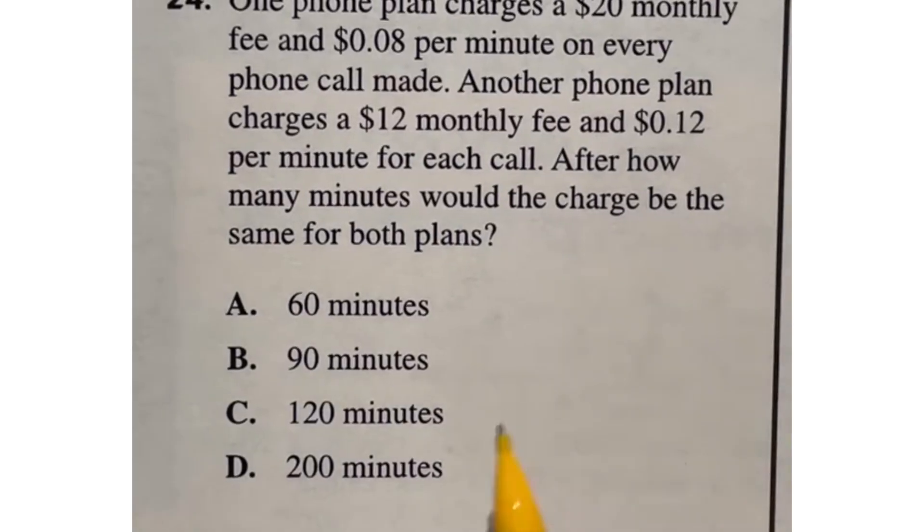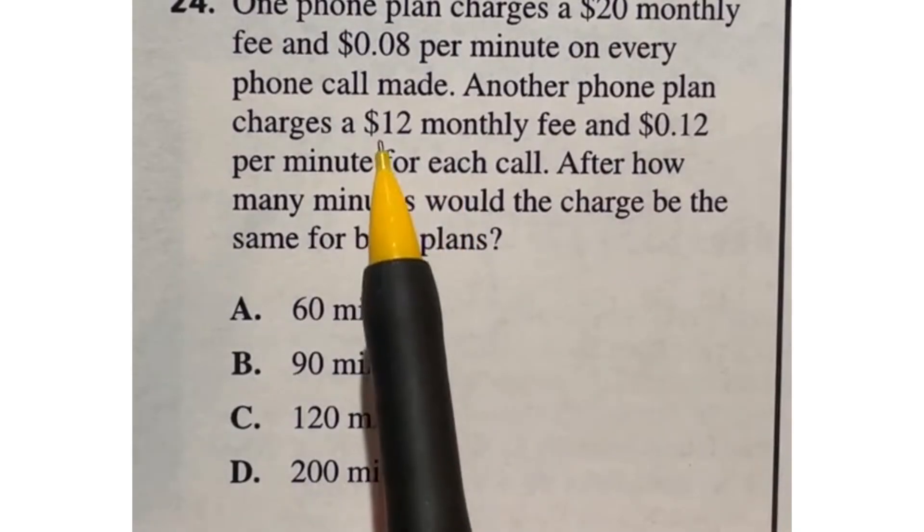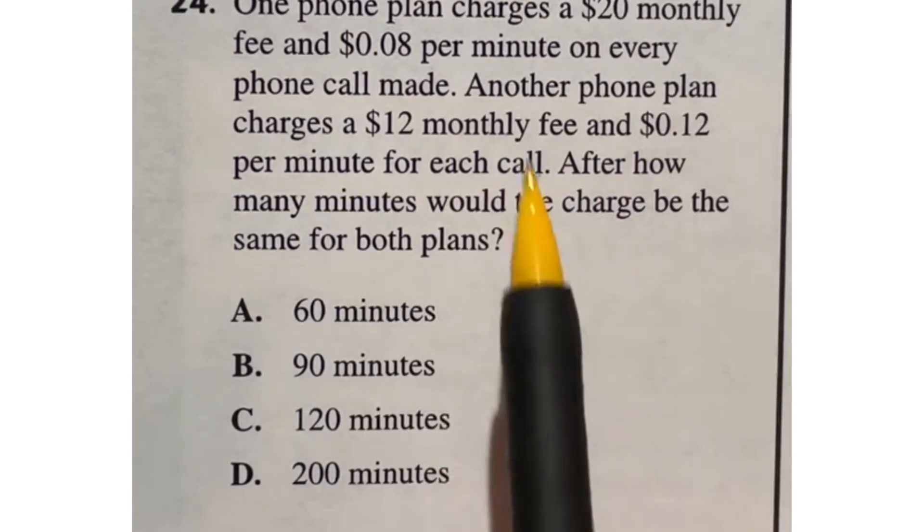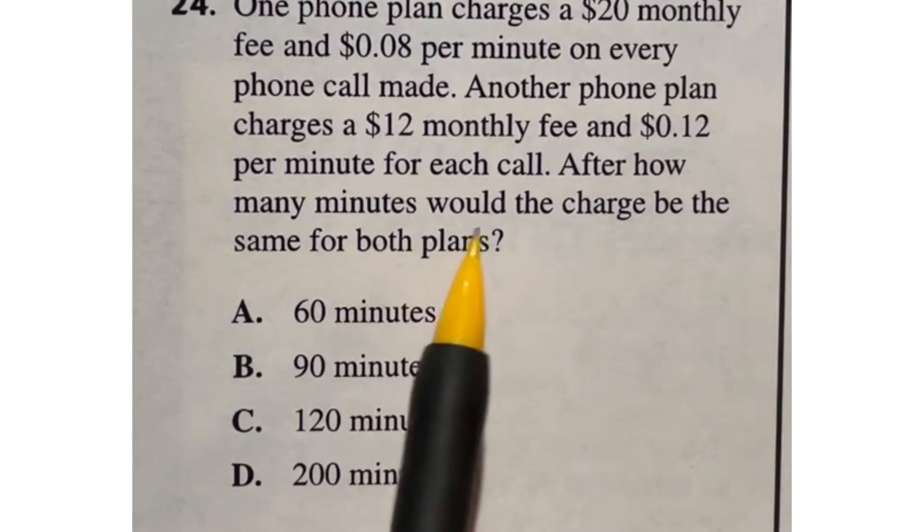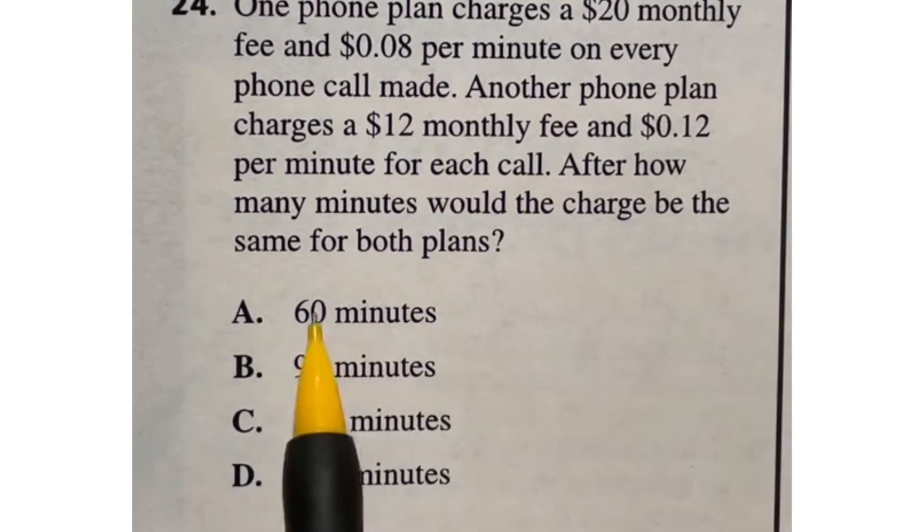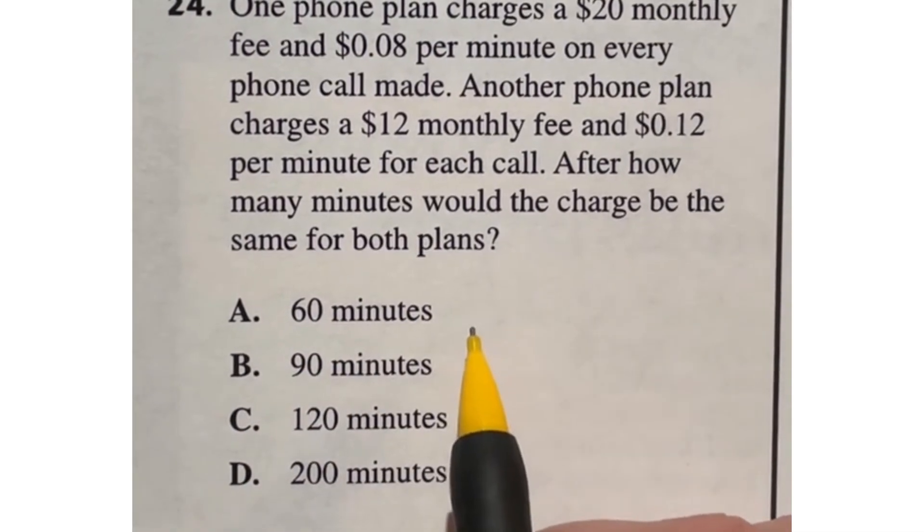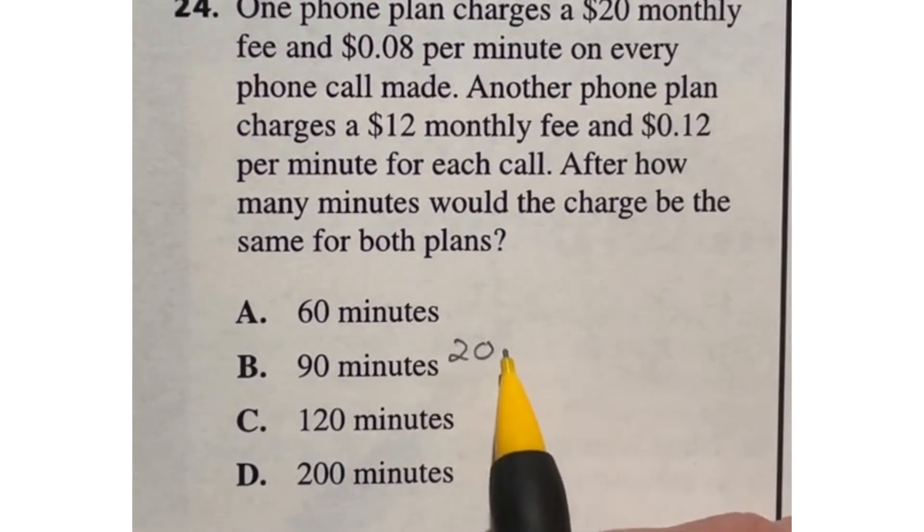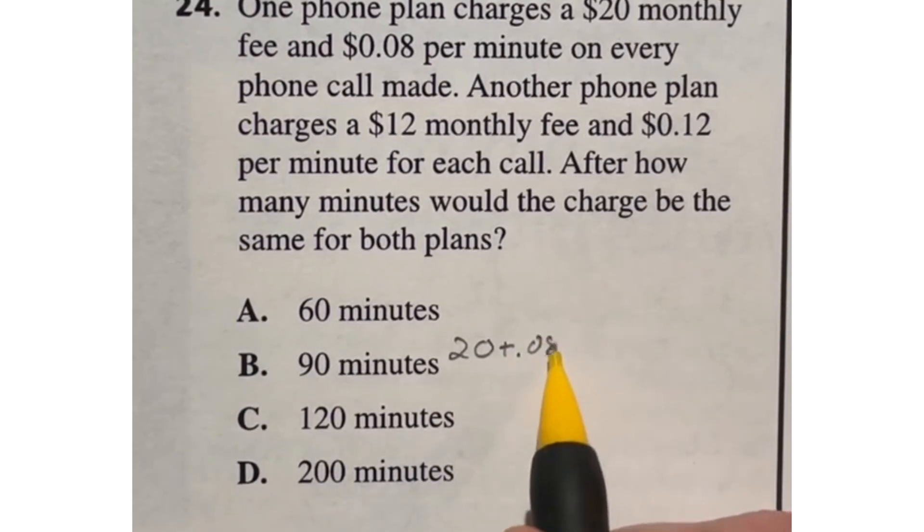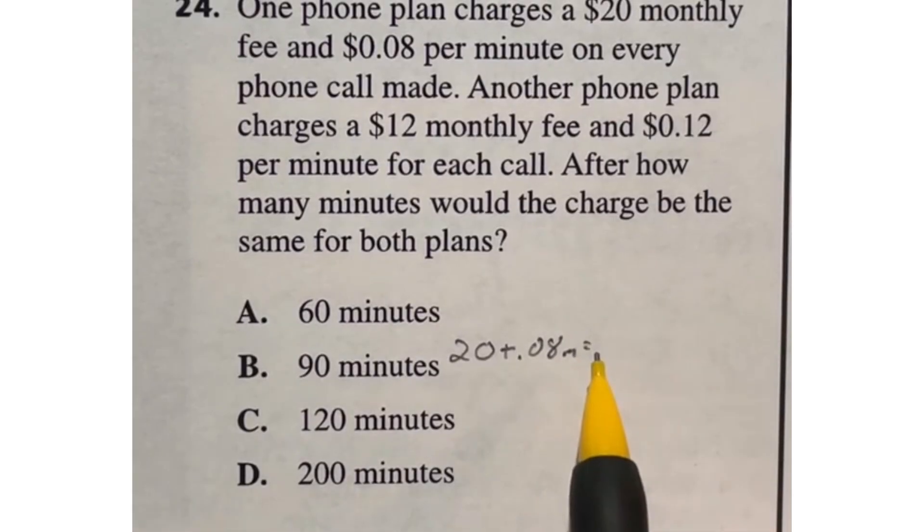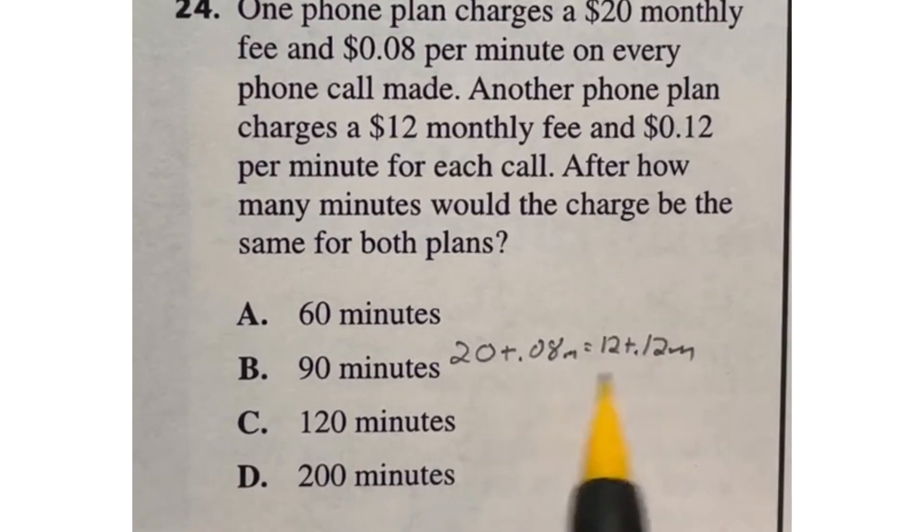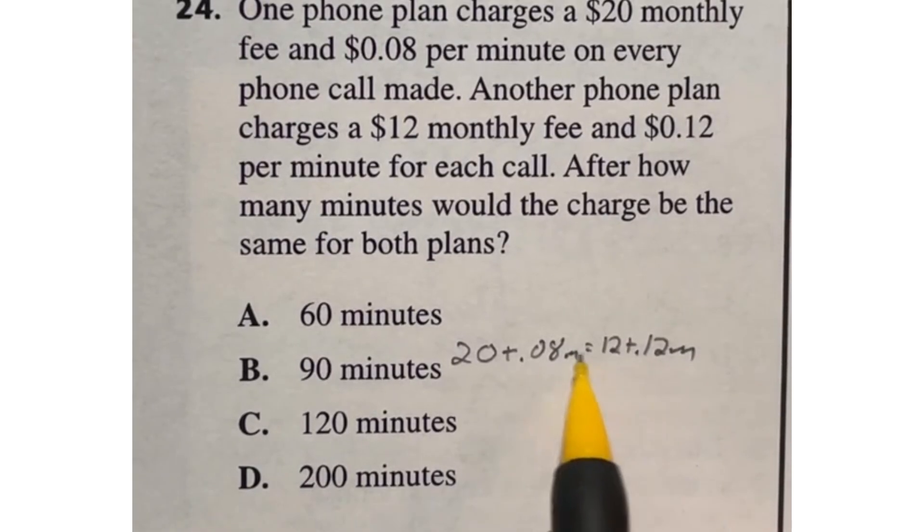Number 24 says one phone plan charges a $20 monthly fee and eight cents per minute on every phone call made. Another phone plan charges $12 monthly fee and 12 cents per minute for each call. How many minutes would the charges be the same for both? We got to set two equations equal to each other. The first one charges you $20 straight up plus 0.08 times the number of minutes. The second one is going to be $12 plus 0.12 times M. And we want to know when the two of these are equal.